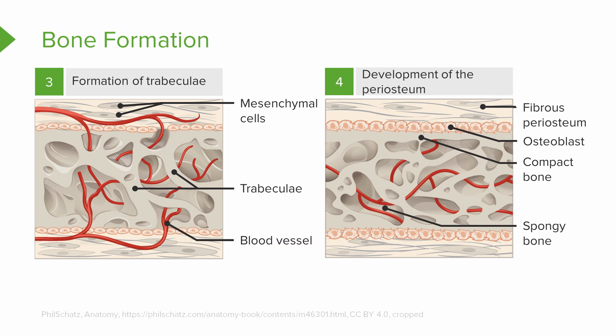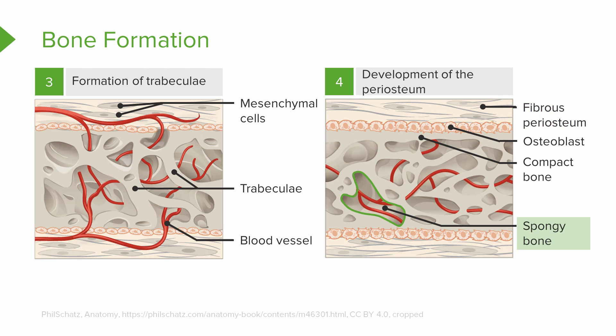In the final step of intramembranous ossification, compact bone is starting to be formed toward the periphery of the bone. The periosteum starts to form the fibrous periosteum layer on the outside of the bone. And inside the bone, the spongy bone begins to be filled with red marrow as red blood cells are starting to form marrow tissue.